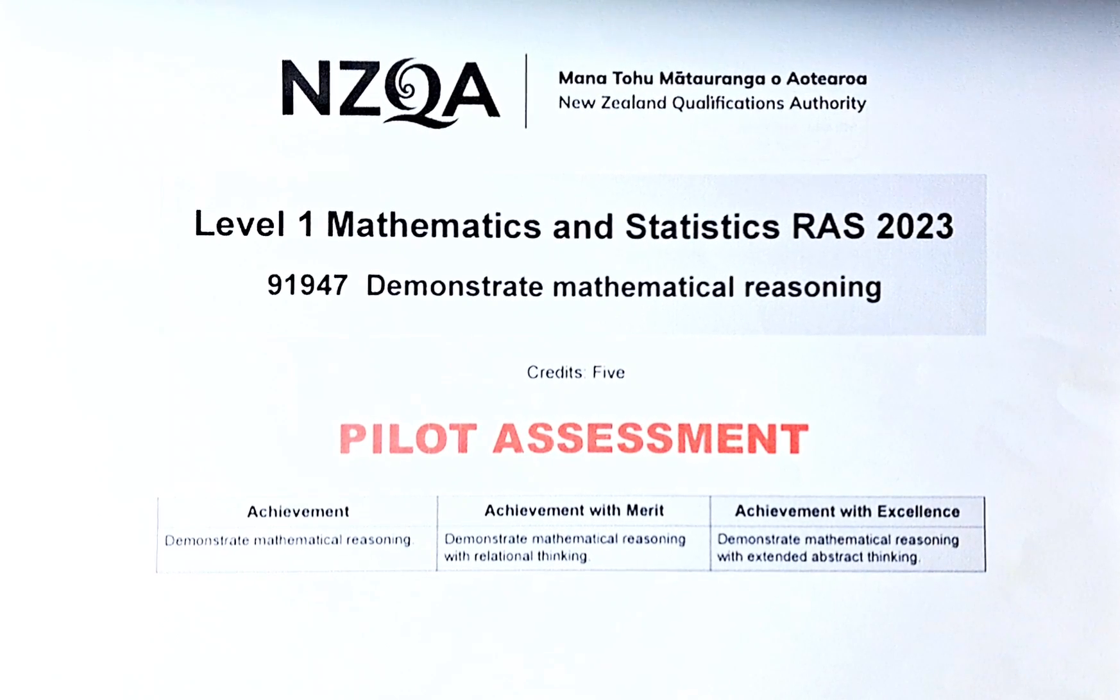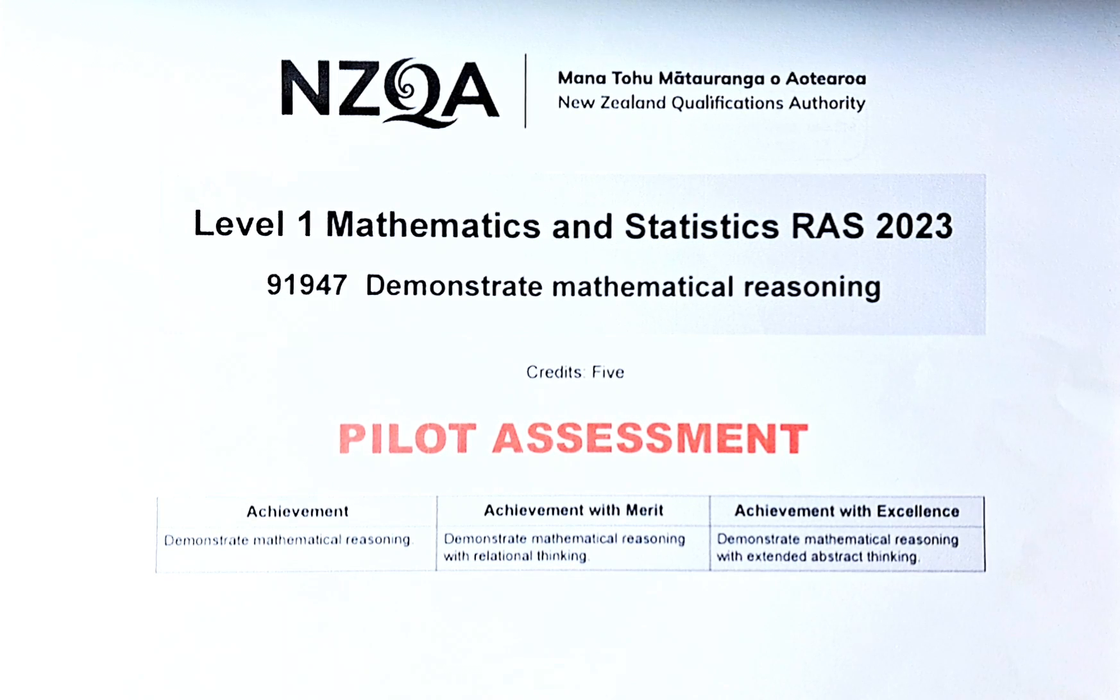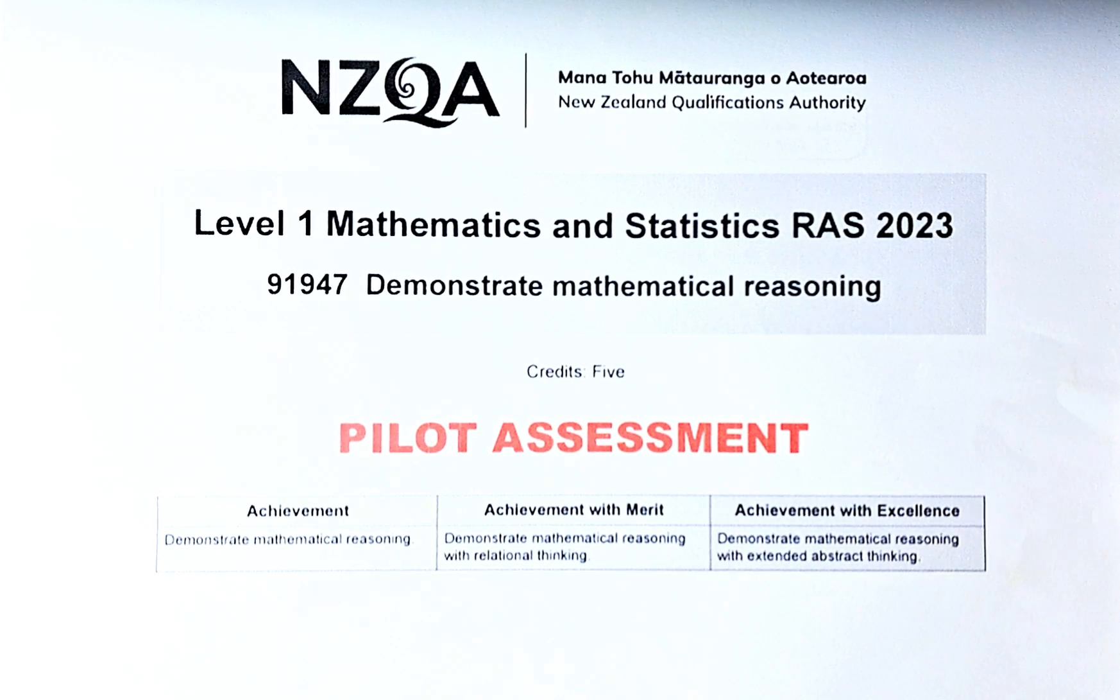Good day and welcome to video number 12 of the 2023 Level 1 NCEA maths and stats paper. This demonstrates mathematical reasoning, paper number 91947, and this is a pilot assessment because for the first time in 2024 this standard will be assessed externally. To pass this internal assessment, whether you get achieved, merit, or excellence, you will get 5 credits.